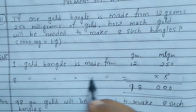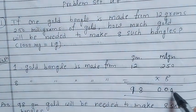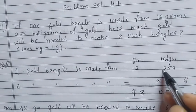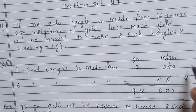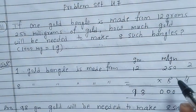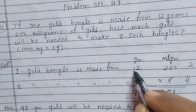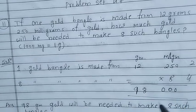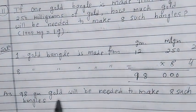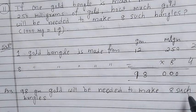Multiply: 8 × 250 milligrams = 2000, write 000 carry 2. Then 8 × 12 = 96, plus carry 2 = 98. So the answer is 98 grams. 98 grams of gold will be needed to make eight such bangles.